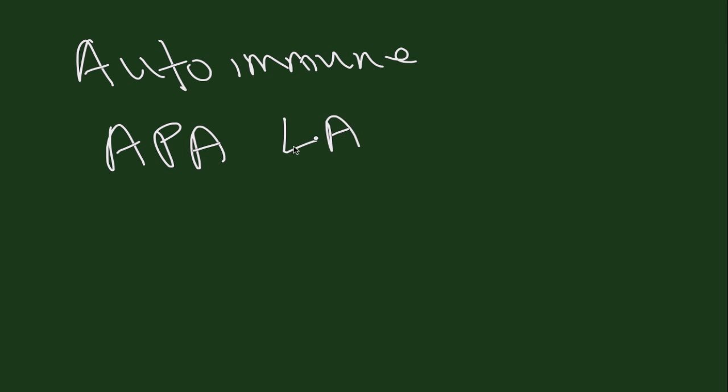The first thing we're going to start with in terms of possible etiologies is autoimmune. Autoimmune has a very wide range of possibilities, but the main ones we focus on with recurrent pregnancy loss are antiphospholipid antibodies, or commonly referred to as APA. The main ones that we look at are lupus anticoagulant or LA, anti-cardiolipin antibody ACA, and beta-2-glycoprotein-1 antibody.